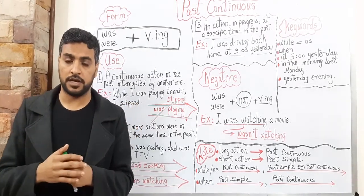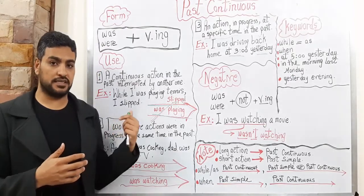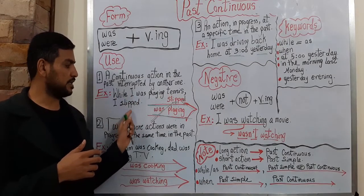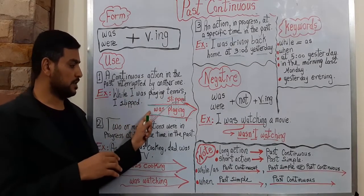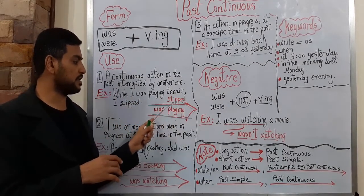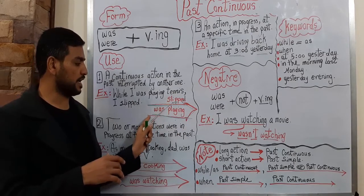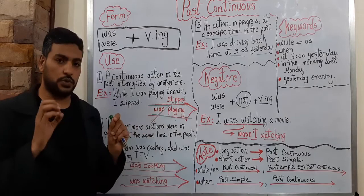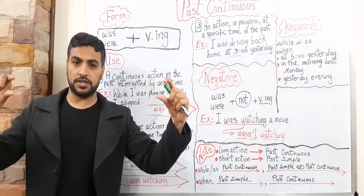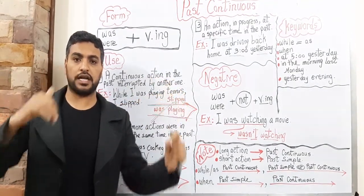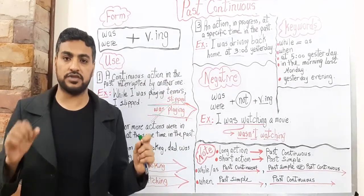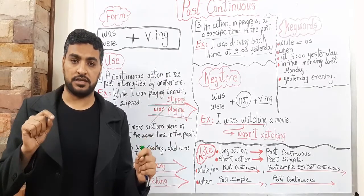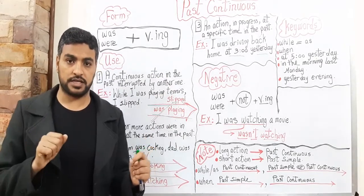Another example: as I was playing tennis, I slept. 'Was playing' is the long action. What interrupted the long action? 'Slept' — that's the Past Simple. So, an action which was in progress, then suddenly another action interrupted it. This is Past Continuous. Past Continuous is the long action, and Past Simple is the short action.